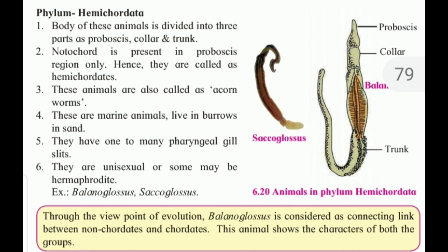These animals are also known as acorn worms. These are marine animals living in burrows in sand. They have one to many pharyngeal gill slits. They are unisexual or some may be hermaphrodite. Examples include Balanoglossus and Saccoglossus. Through the viewpoint of evolution, Balanoglossus is considered a connecting link between non-chordates and chordates, as these animals show the characters of both groups.